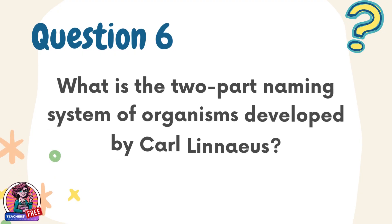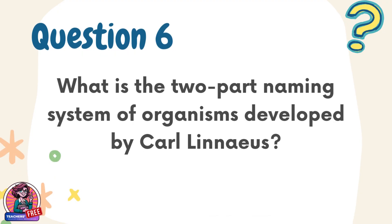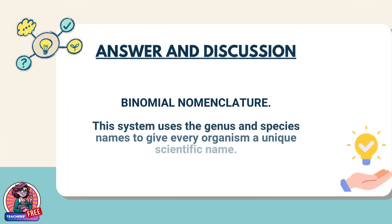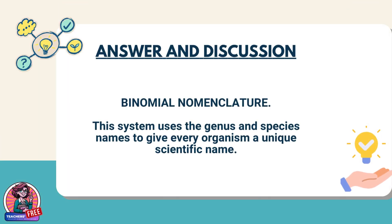Question 6. What is the two-part naming system of organisms developed by Carl Linnaeus? Answer: Binomial nomenclature. This system uses the genus and species names to give every organism a unique scientific name.